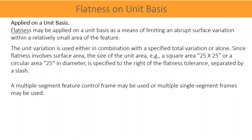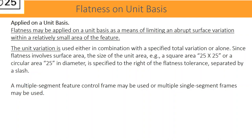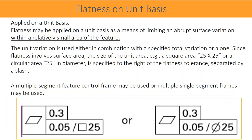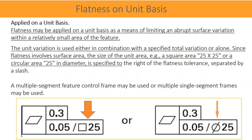Flatness may be applied on a unit basis as a means of limiting an abrupt surface variation within a relatively small area of the feature. The unit variation is used either in combination with a specified total variation or alone. Since flatness involves surface area, the size of the unit area — for example, a square area 25 by 25 or a circular area 25 in diameter — is specified to the right of the flatness tolerance, separated by a slash. A multiple segment feature control frame or multiple single segment frames may be used.